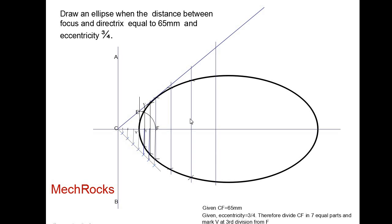Now you have to locate the minor axis. This is the major axis. Locate the midpoint of this major axis and draw a vertical line — this is the minor axis of the ellipse. Like this you can draw the ellipse by the general method. Thank you for watching my video.